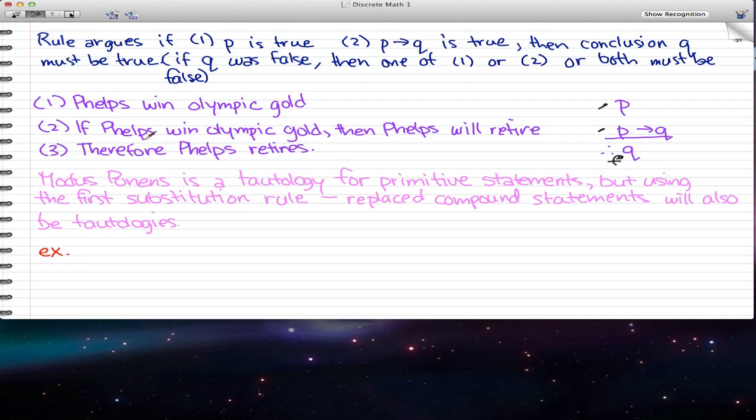In the third statement, we found that Phelps retires. That's really modus ponens in its essence - you're canceling these two Ps and we're left with Q. The statement is: Phelps wins Olympic gold, if Phelps wins Olympic gold then Phelps will retire. We know Phelps did win Olympic gold, so Phelps will retire. That's why we get the inference that Phelps retires.